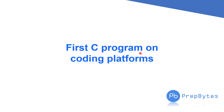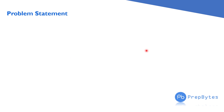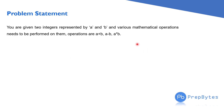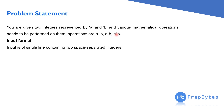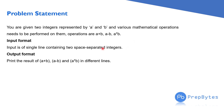For example, the problem statement is: you are given two integers represented by a and b, and various mathematical operations need to be performed on them. The operations are a plus b, a minus b, and a multiplied by b. The input format is a single line containing two space-separated integers. The output format is: print the result of a plus b, a minus b, and a multiplied by b in different lines.